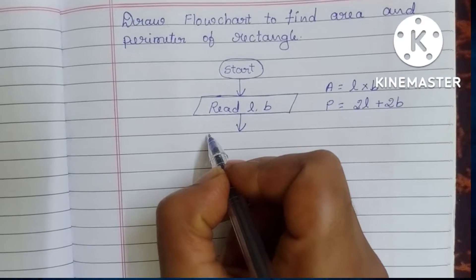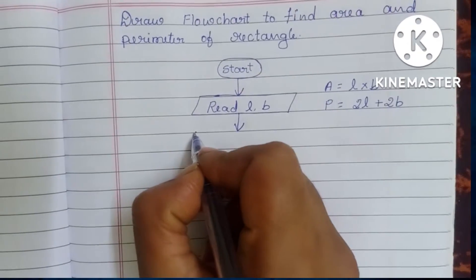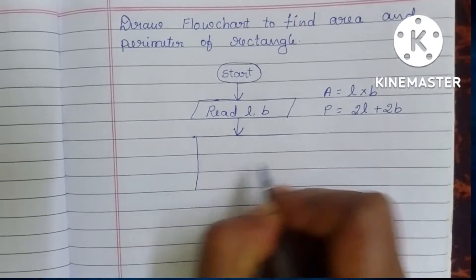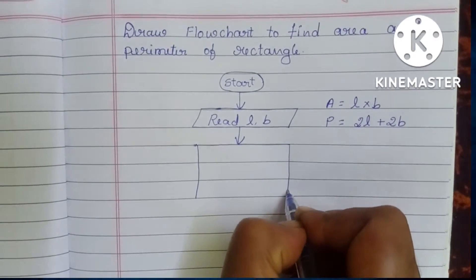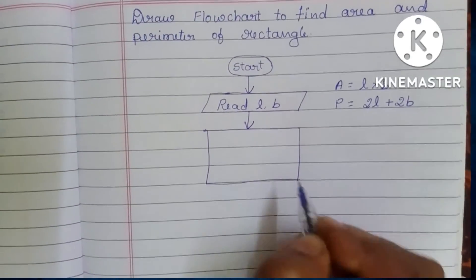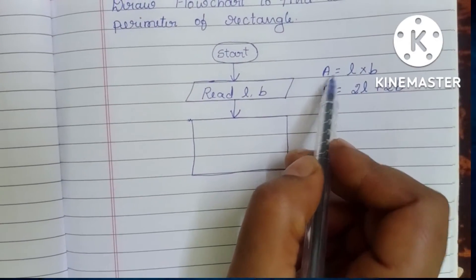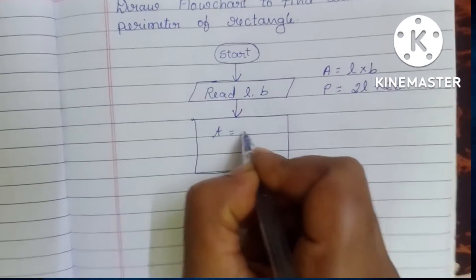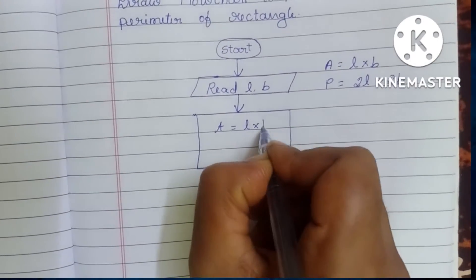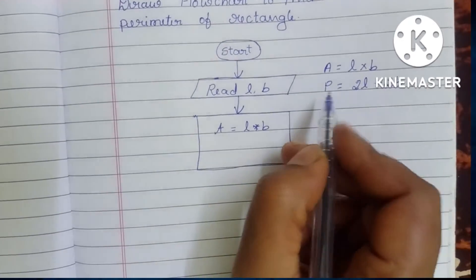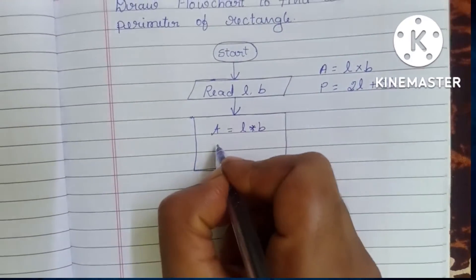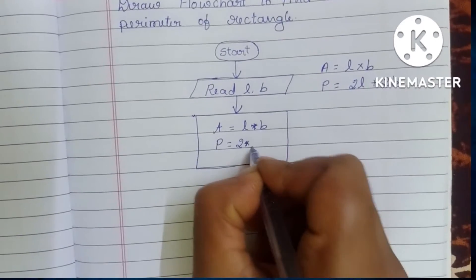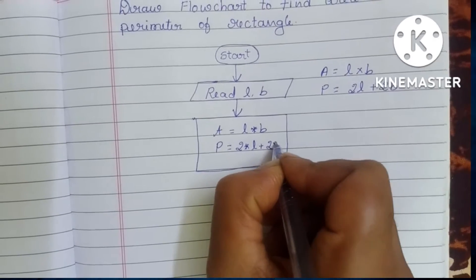Next we have to write the process step, which is written within a rectangle — so draw a rectangle. First, calculate the area: A = Length × Breadth. Next, calculate the perimeter: P = 2 × Length + 2 × Breadth.